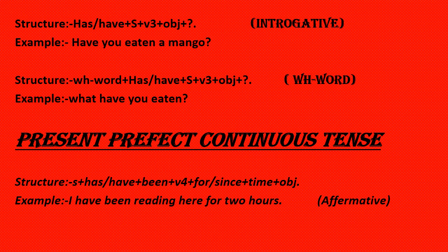The affirmative structure for Present Perfect Continuous Tense is: Subject + has/have + been + V1-ing + for/since + time + Object. Example: I have been reading here for two hours.